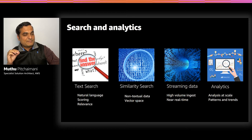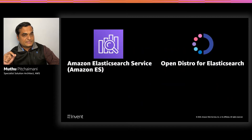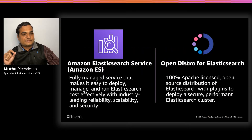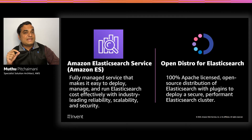Elasticsearch has powerful capabilities, but it is often non-trivial to set up a large-scale cluster, optimize for peak performance, operate and maintain it. This is where managed offerings come in handy. Amazon's Elasticsearch service, called Amazon ES, is a fully managed service that helps you set up, deploy, operate, and maintain an Elasticsearch cluster quite easily and securely. Amazon Elasticsearch Service is built on open-source software called OpenDistro for Elasticsearch, which is 100% Apache licensed and comes with many enterprise-grade features like security and alerting for free.